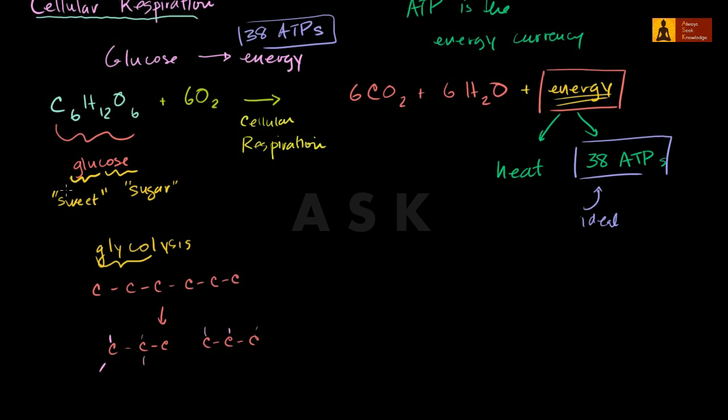By glycolysis, it by itself generates, well, it needs two ATPs, and it generates four ATPs. So net-net, on a net basis, it generates two net ATPs. So that's the first stage. And this can occur completely in the absence of oxygen. I'll do a whole video on glycolysis in the future.